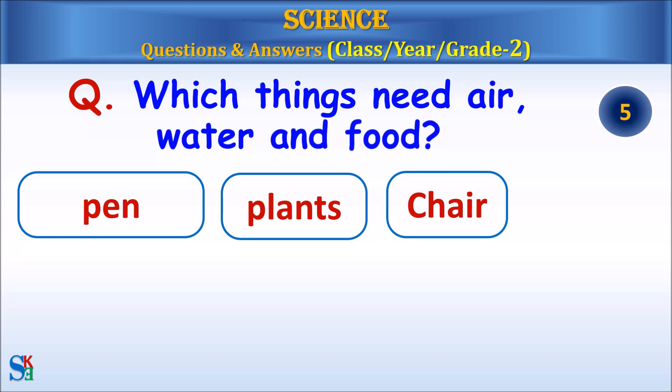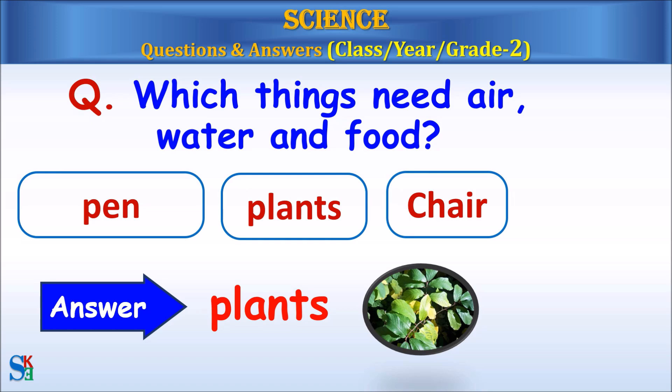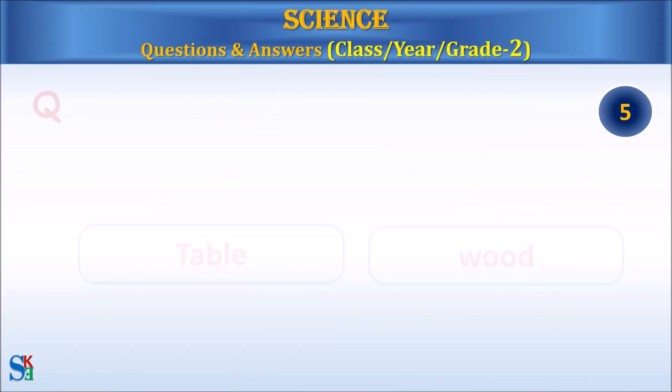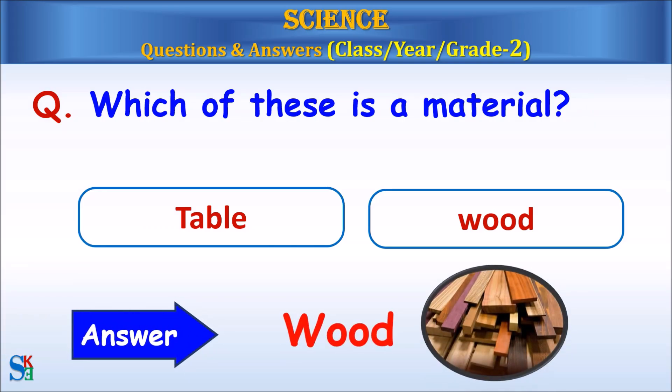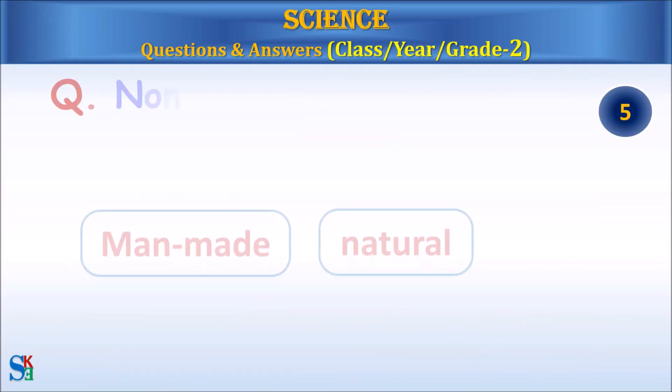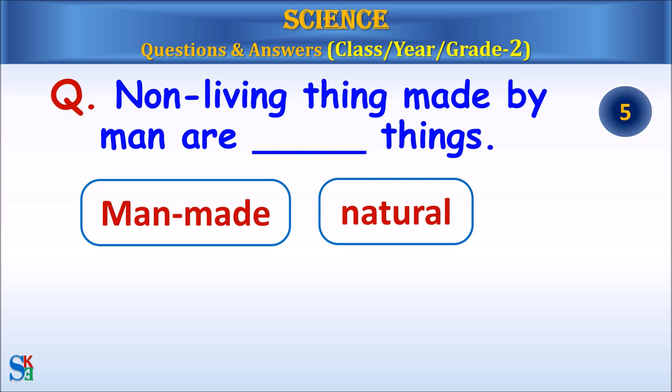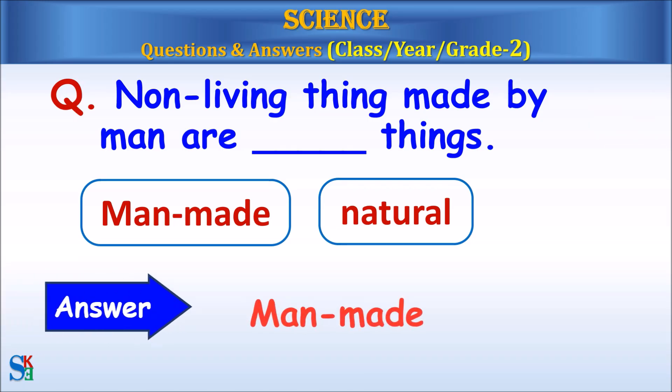Which things need air, water and food? Pen, plants or chair? Answer, plants. Which of these is a material, table or wood? Answer, wood. Non-living things made by man are man-made or natural things? Answer, man-made things.